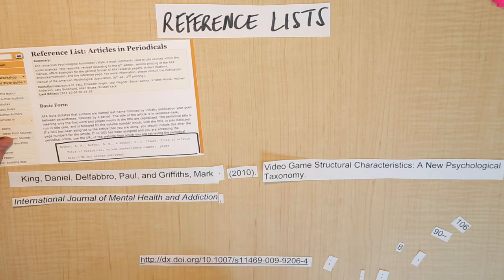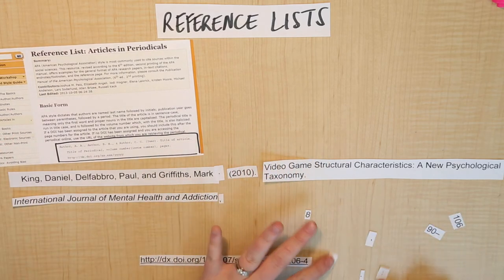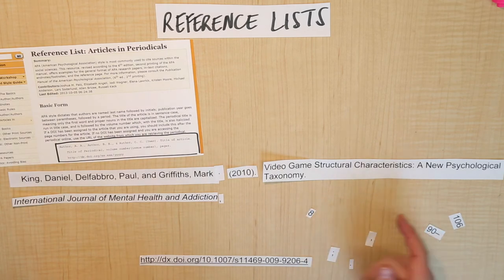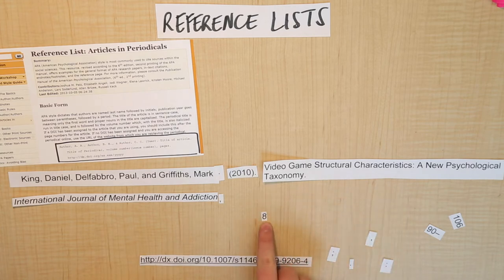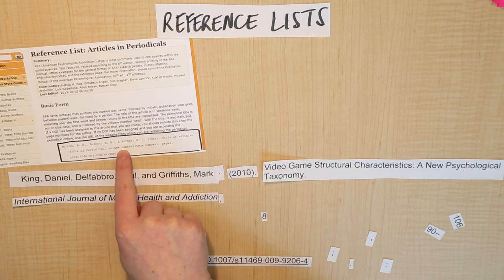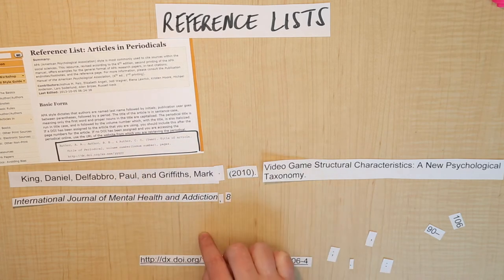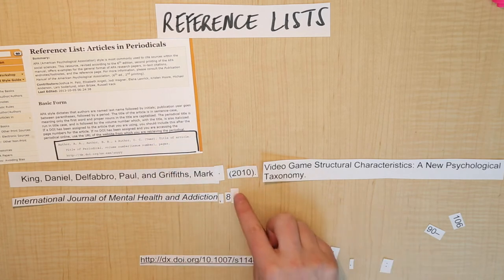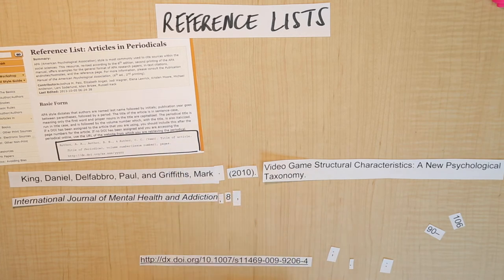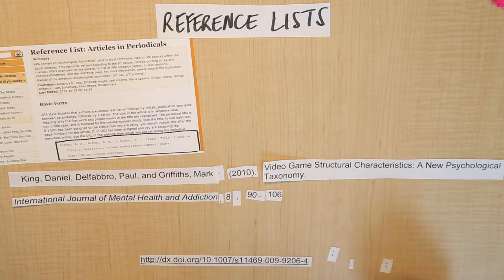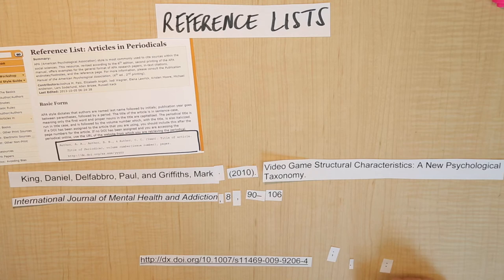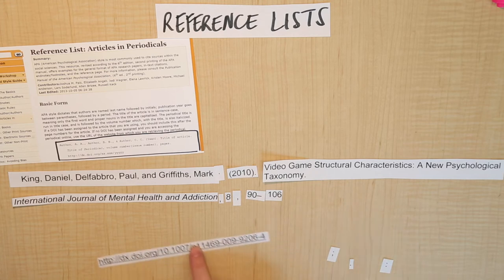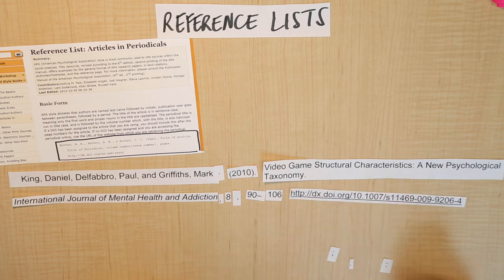After the journal title, a comma comes next. Then the volume number and issue number if you have it. In this case I only have a volume because they omitted the issue, which is okay. The volume is also italicized, as shown in the example. We don't have an issue number, so that's fine. Then another comma and the page numbers — in this case page 90 to page 106 — and then the DOI, the digital object identifier, comes last.